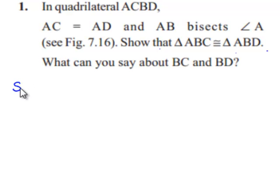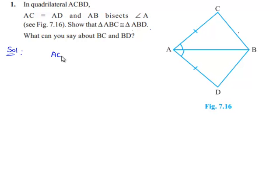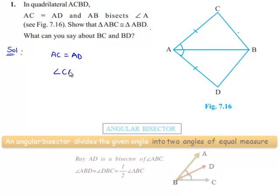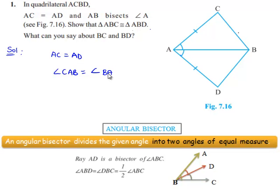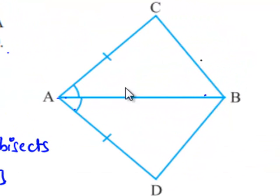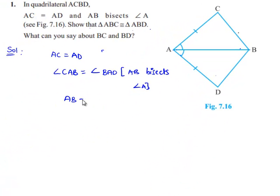Now moving on to the solution. It is given that AC is equal to AD, and AB bisects angle A. That means angle CAB is equal to angle BAD. Also, AB is a common side for both triangles ABC and ABD, so AB is equal to AB.